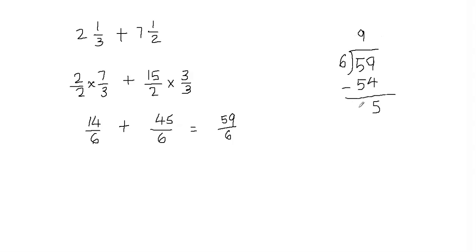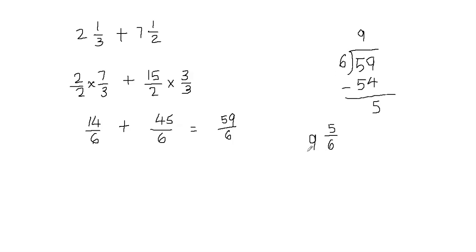Now I need to write this answer as a mixed fraction. I use the quotient, the remainder, and the divisor. The quotient becomes the whole part, so I write 9. The remainder becomes the fraction's numerator, and the divisor becomes the fraction's denominator. So my final answer is 9 and 5 sixths.